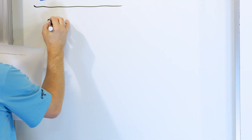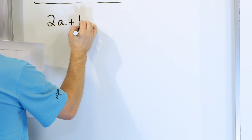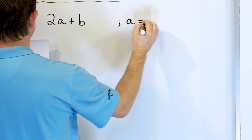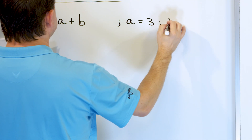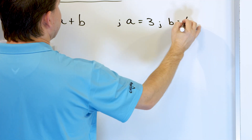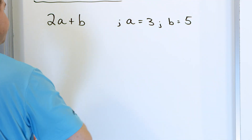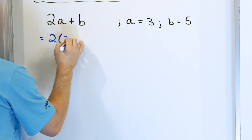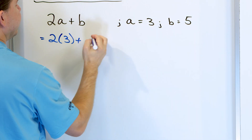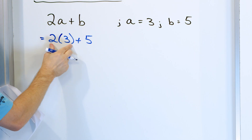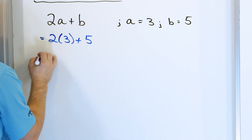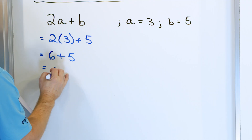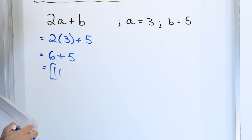Let's look at the expression 2 times a plus b, with a equal to 3 and b equal to 5. I have two different variables, a and b — I just stick them in. Two times a, a is 3; b is 5. Now I evaluate: I have multiplication and addition, so I multiply first. Two times 3 is 6; still have to add that 5. Six plus 5 is 11. That's the final answer.